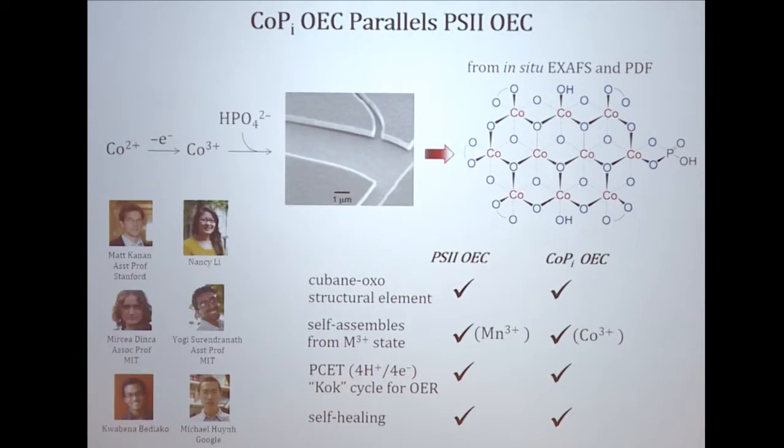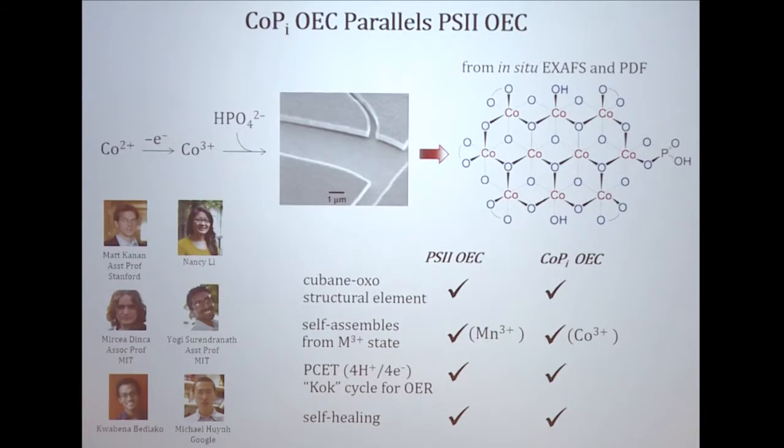So this compound that forms spontaneously is a bunch of fused cubanes that have the same basic structural element of the oxygen evolving complex. The oxygen evolving complex in nature assembles from solution, manganese 2+ gets oxidized to manganese 3+ and it forms. This gets oxidized from cobalt 2+ to 3+ and it forms. After years of work, we figured out the mechanism of the proton coupled electron transfer. The electron proton inventory of the oxygen evolving complex is precisely the same as this compound when it splits water.